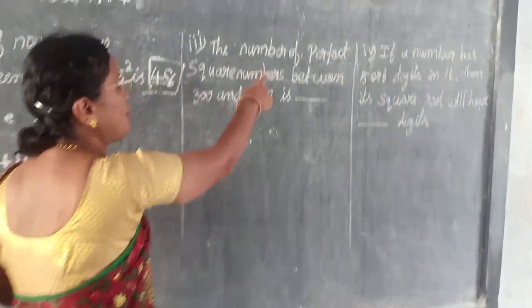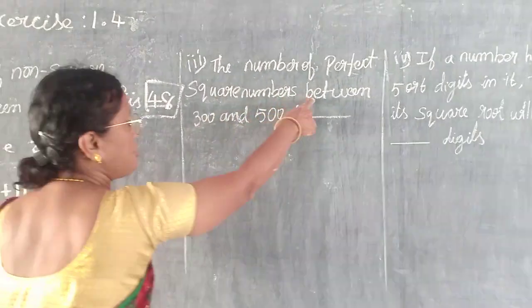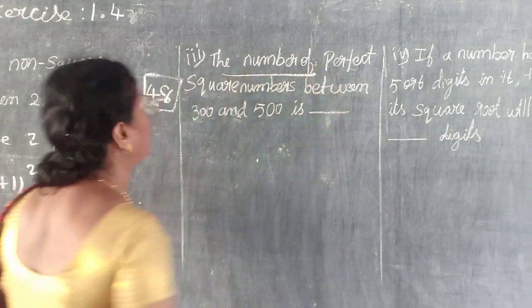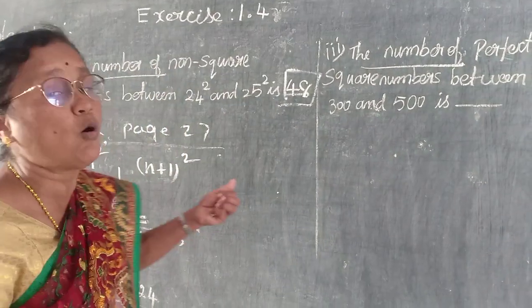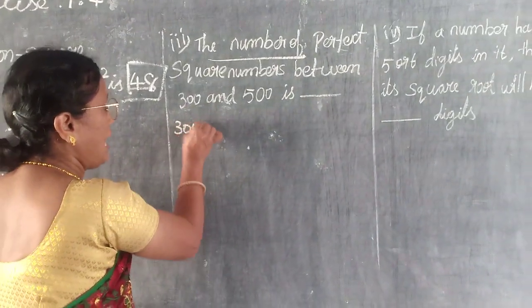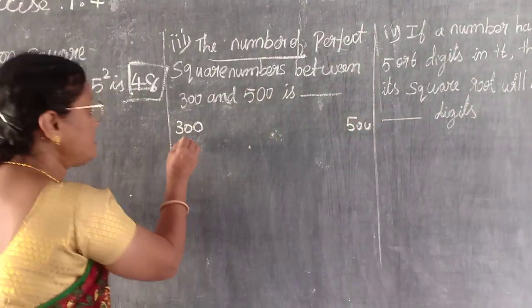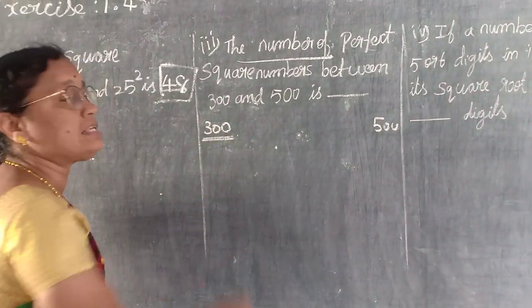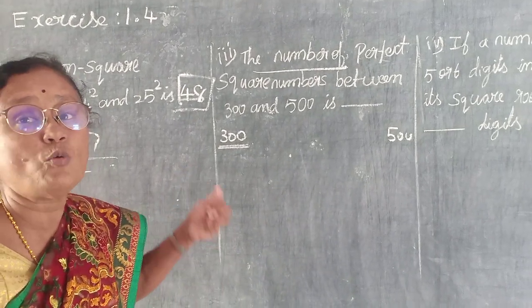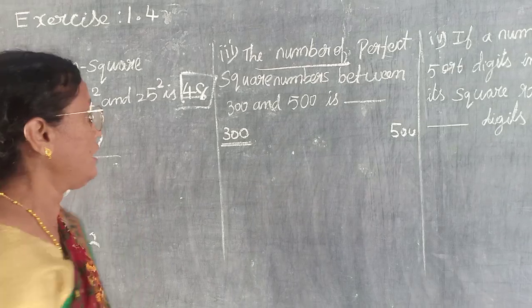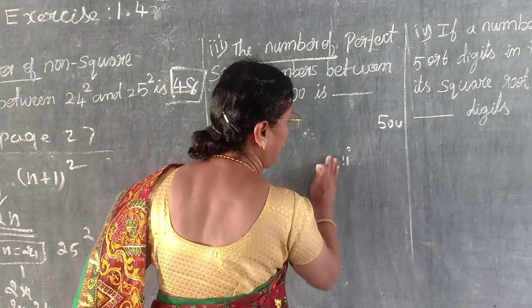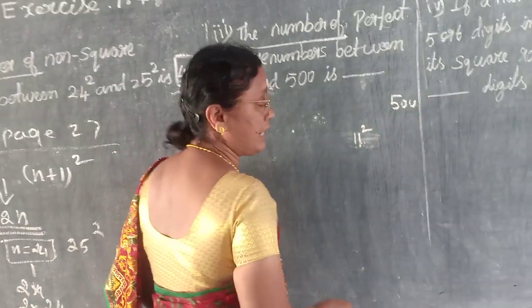The number of perfect square numbers between 300 and 500 is blank. So here you have to count them. First you look at 300 and 500. What square numbers lie in it? I told you many times — you should be thorough with squares from 1 to 20. Here 1 to 10 is not possible, so start from at least 11.